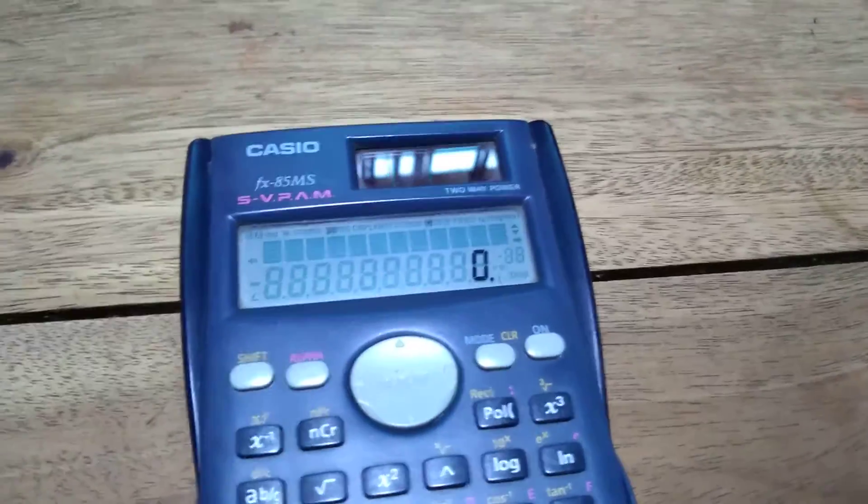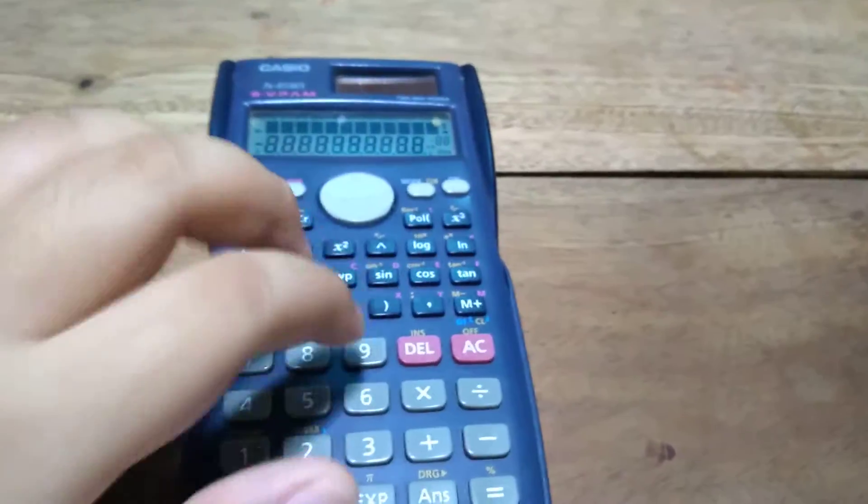I'm going to turn on this calculator and it says number one: write any random symbols. Okay, write any random symbols. Alright.